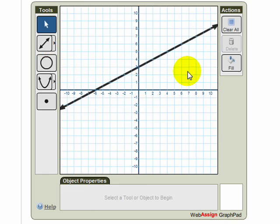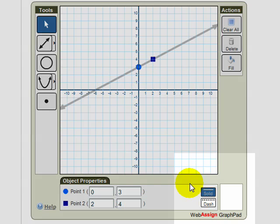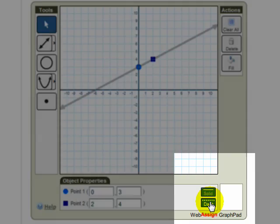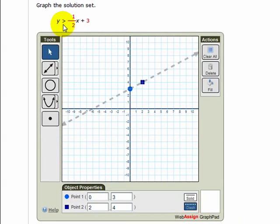Now, if we click outside the line here, you'll see we have now a solid line, but I need this to be a dashed line. So I'll click on this again to edit it, and down here at the bottom of the graph pad, you'll see we have the option for a solid line or a dashed line. So I'm going to change that to dashed because of the greater than sign here.